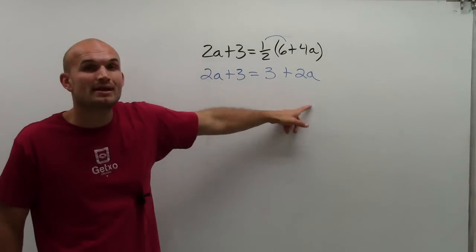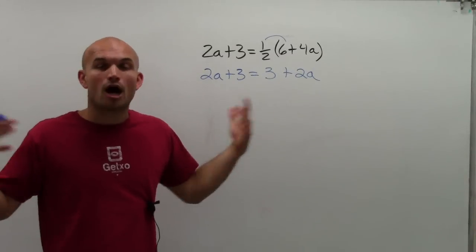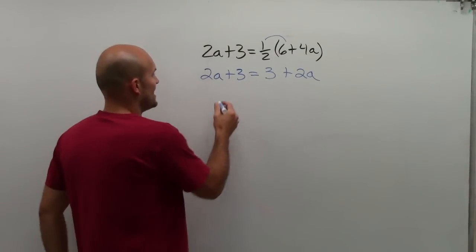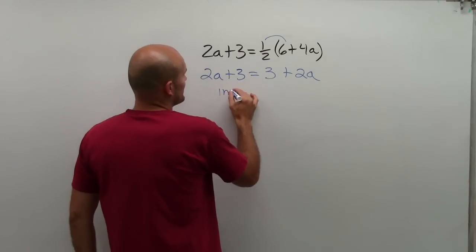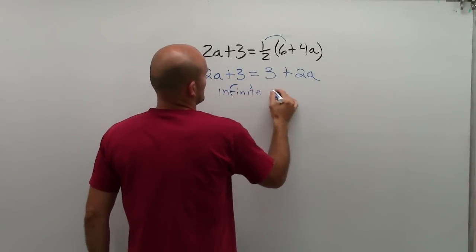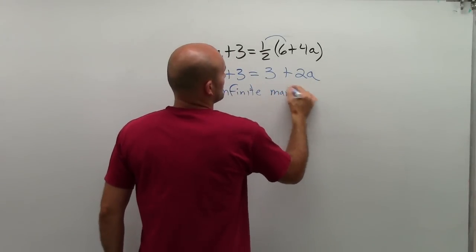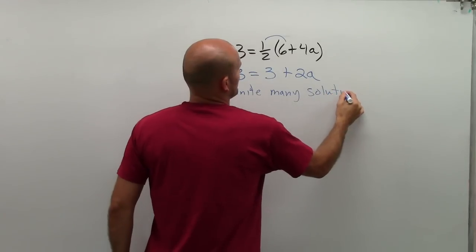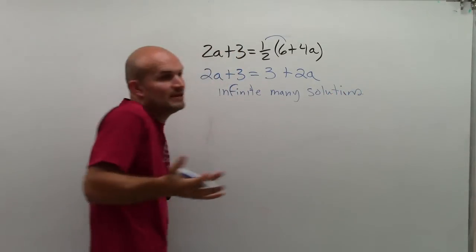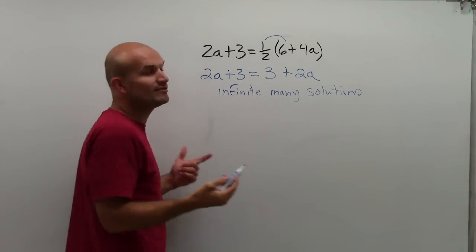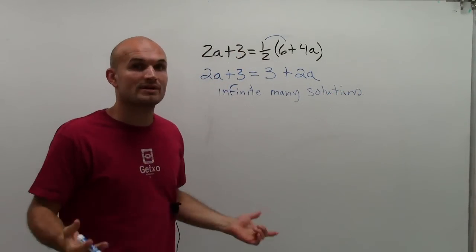So it doesn't matter what number I put in for a. It's always going to be true. That's why we write for this problem, it's infinite many solutions. There's infinite many. It doesn't matter what number I put in for a. My equation is always going to be true.